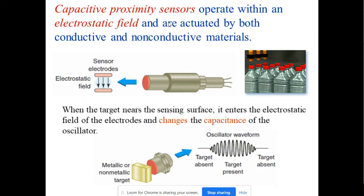Next is the capacitive proximity sensor. When it says capacitive, it operates within an electrostatic field. It's actuated by both conductive and non-conductive materials. Let's say we have a production line that detects the bottles, for instance, you can use this type of sensor.